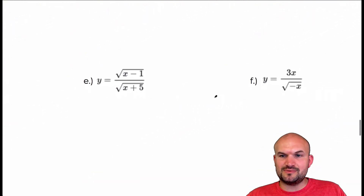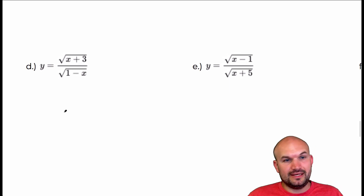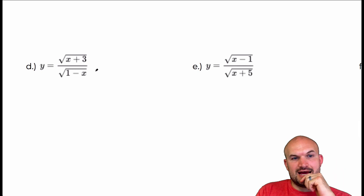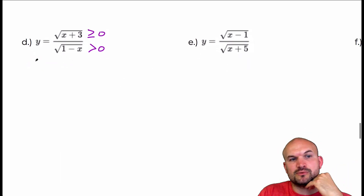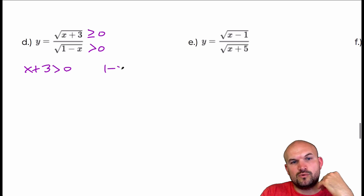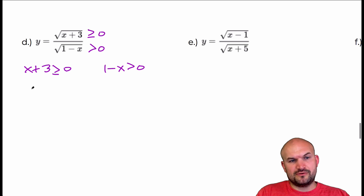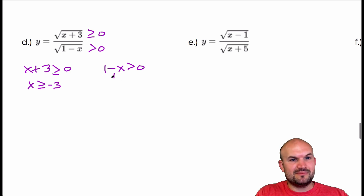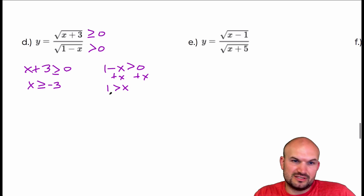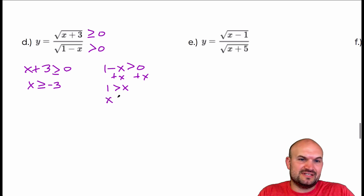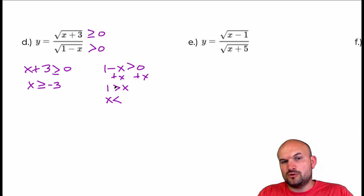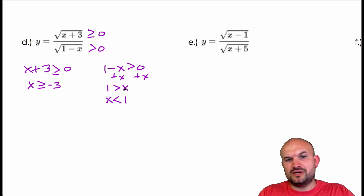The next one has radicals in both the numerator and denominator. Remember: for the radical in the denominator, set it strictly greater than zero; for the numerator, set it greater than or equal to zero. So I have x plus three greater than or equal to zero for the numerator, giving x is greater than or equal to negative three. And for the denominator radical, one minus x greater than zero. Rather than subtracting and dividing by negative one, I just move x to the other side, keeping the inequality direction, giving x is less than one.